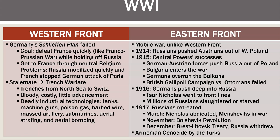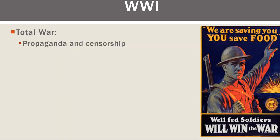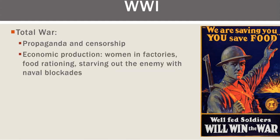Lenin sends Trotsky to negotiate a peace treaty — the Treaty of Brest-Litovsk. They give up one third of European Russia. In the middle of all this, the Turks commit genocide on the Armenians. The U.S. has never officially announced that it was genocide, and it looks like Joe Biden is about to do that. Total war means you harness every part of your economy. There's a lot of censorship, propaganda, and economic production.